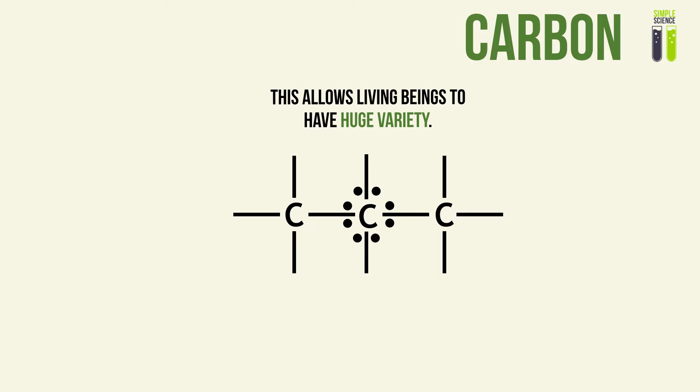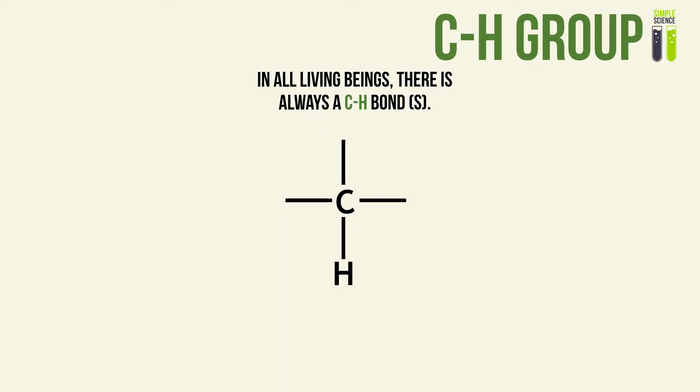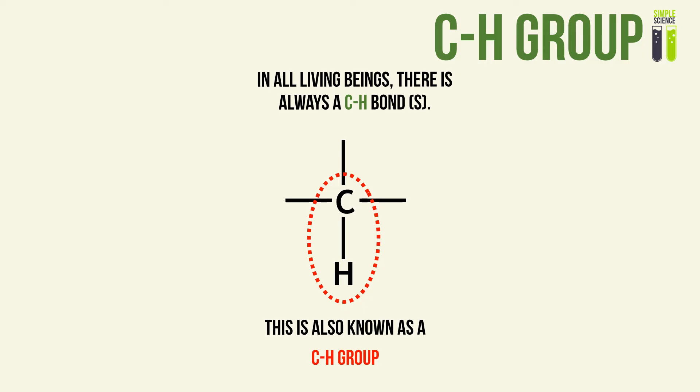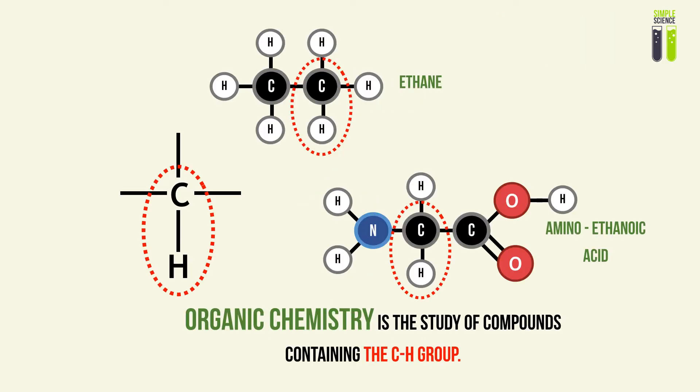A very important concept in organic chemistry is the CH group. In all living beings, there will always be carbon compounds which contain the CH bond. The CH bond helps us separate compounds which are not organic from compounds which are organic. The CH group is basically a group containing the carbon atom, the hydrogen atom, and the two electrons which form a covalent bond between them. Organic chemistry is therefore the study of compounds which contain this group, and organic compounds are compounds which contain the CH group.